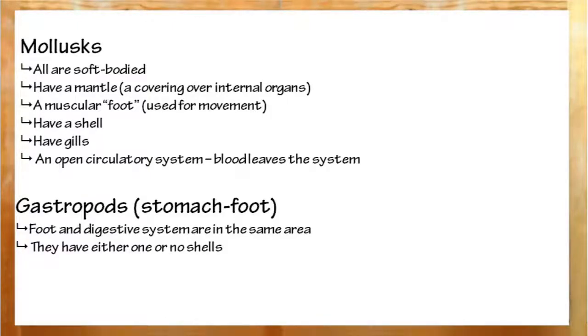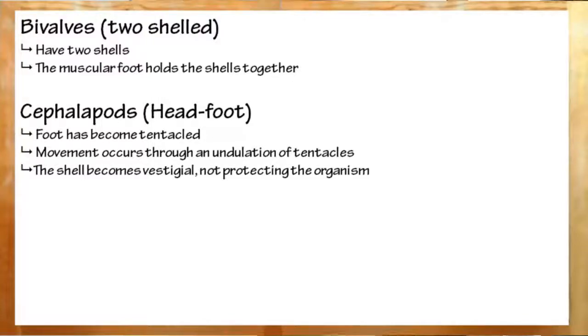Types of molluscs: the gastropod, stomach-foot. Here, the foot and the digestive tract are more or less in the same area. Things like slugs and snails. These are either single or no shell. Next up, bivalves, two shells. Things like clams.